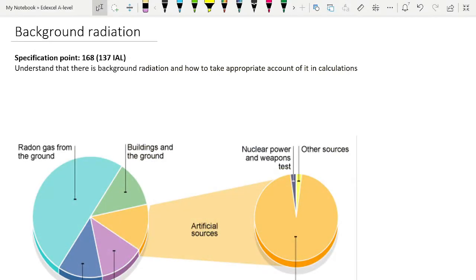A short video today covering specification point 168 for regular A-level or 137 for international A-level, and that's about background radiation, which is the first part of our radiation or radioactivity topic.